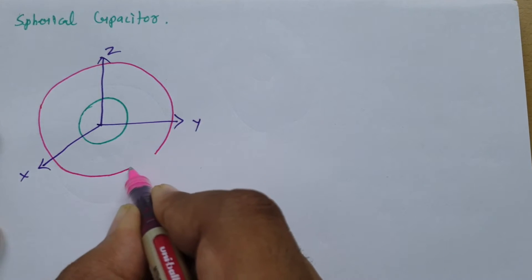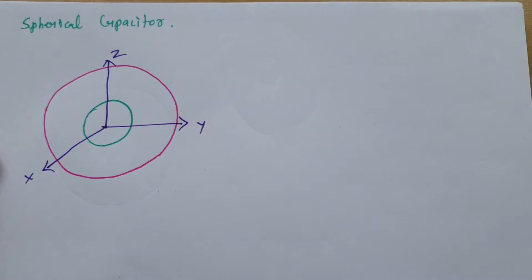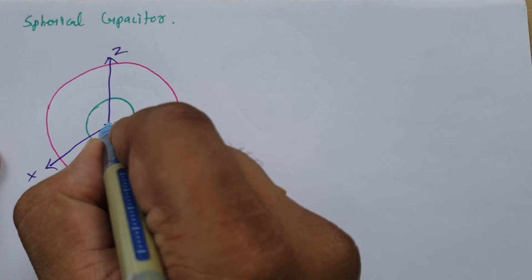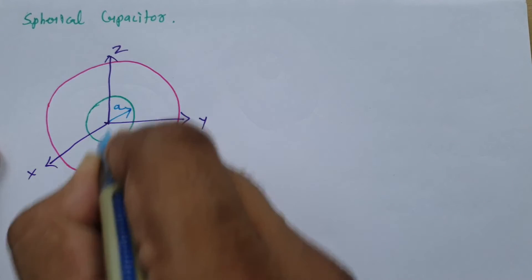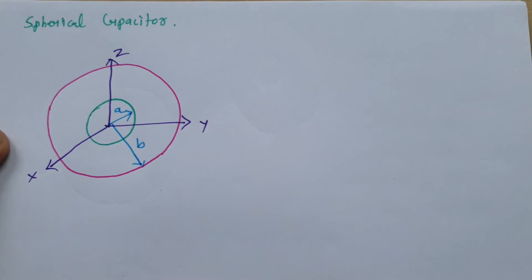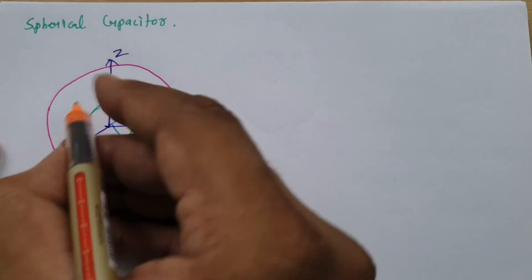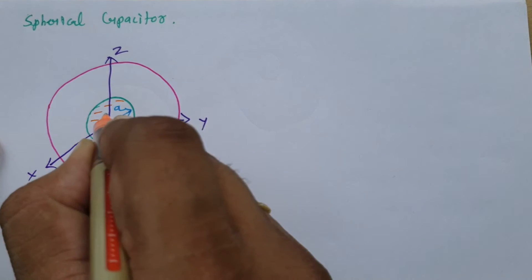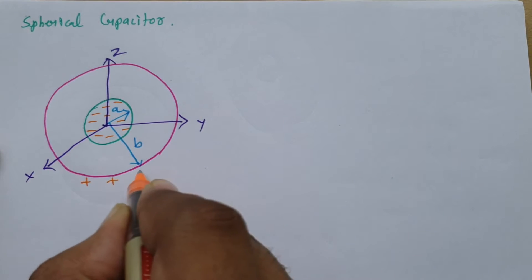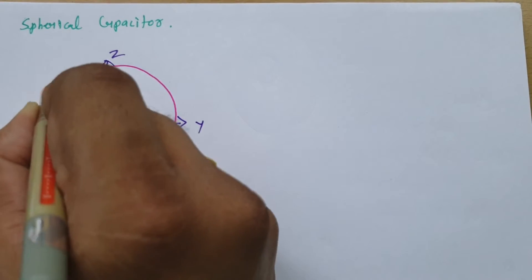It is not a disk, so try to understand this — this is a sphere, not a disk. For the inner sphere, let us say it has radius a, and for the outer sphere, let us say it has radius b. The inner sphere is negatively charged and the outer sphere is positively charged.